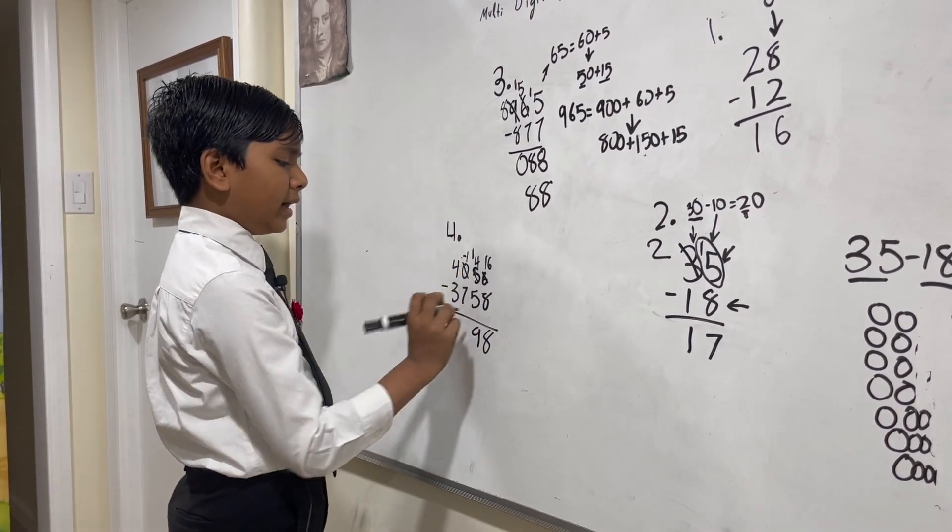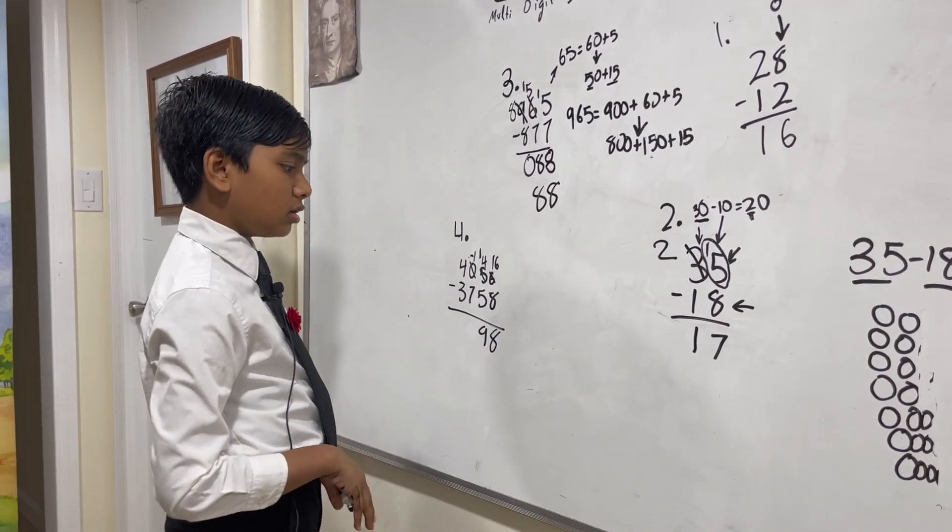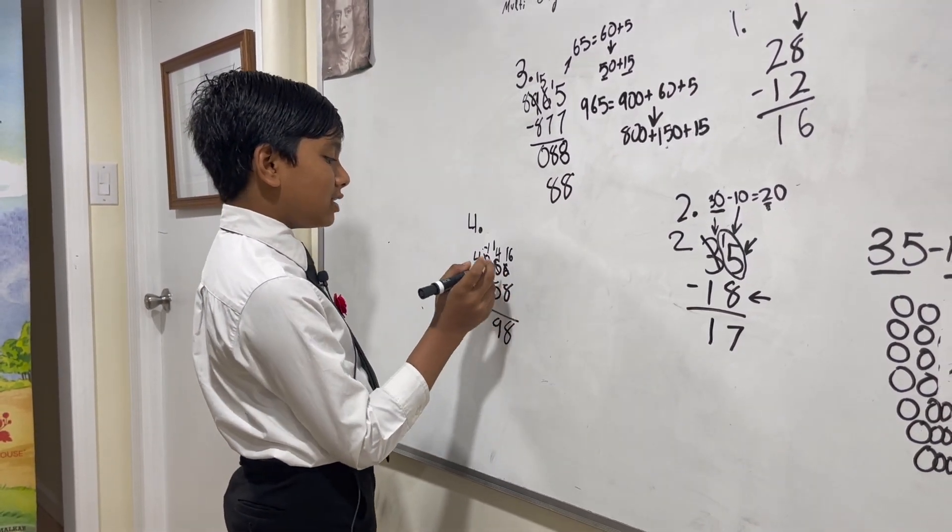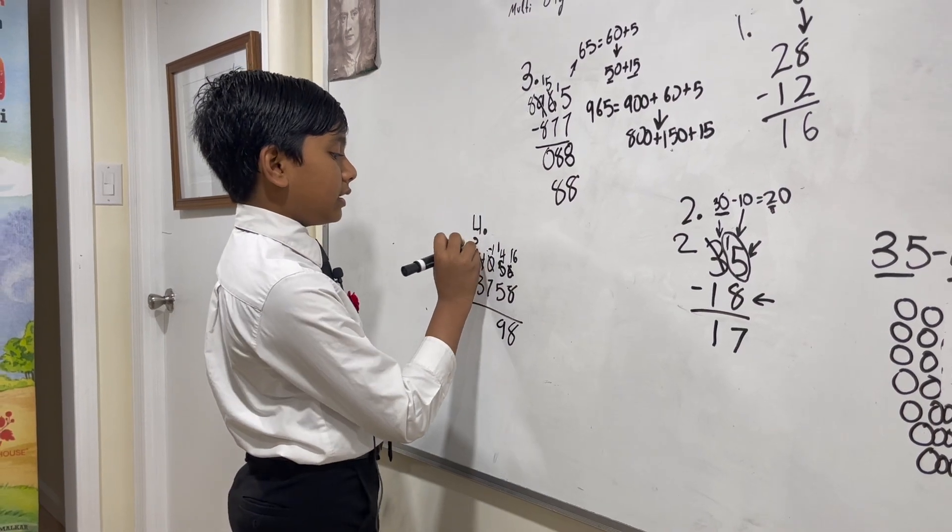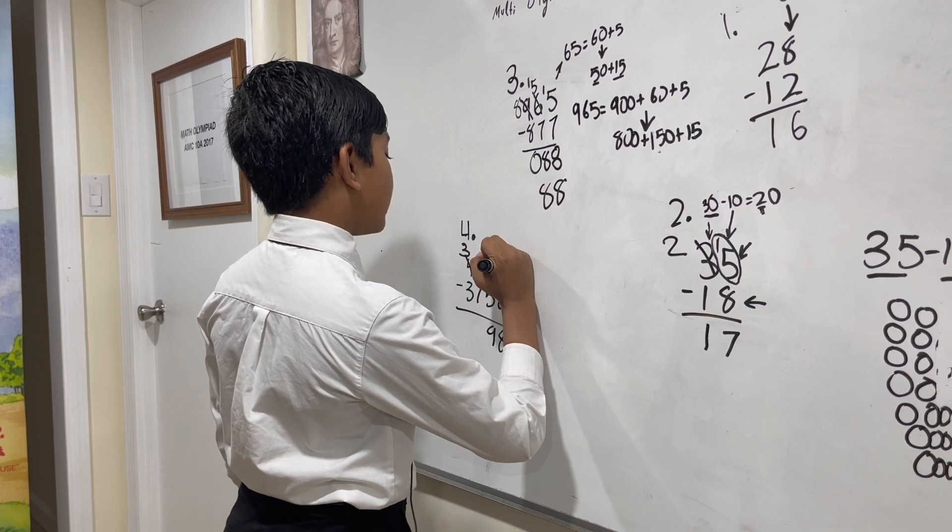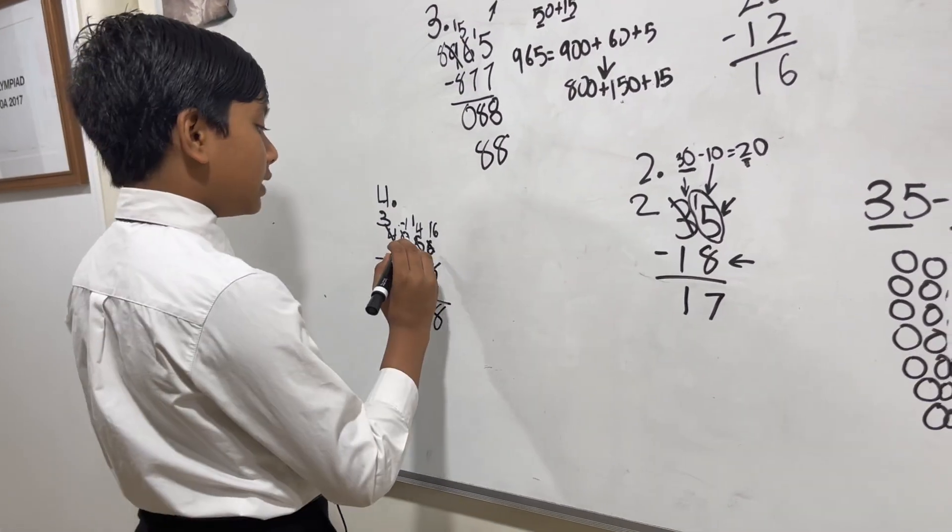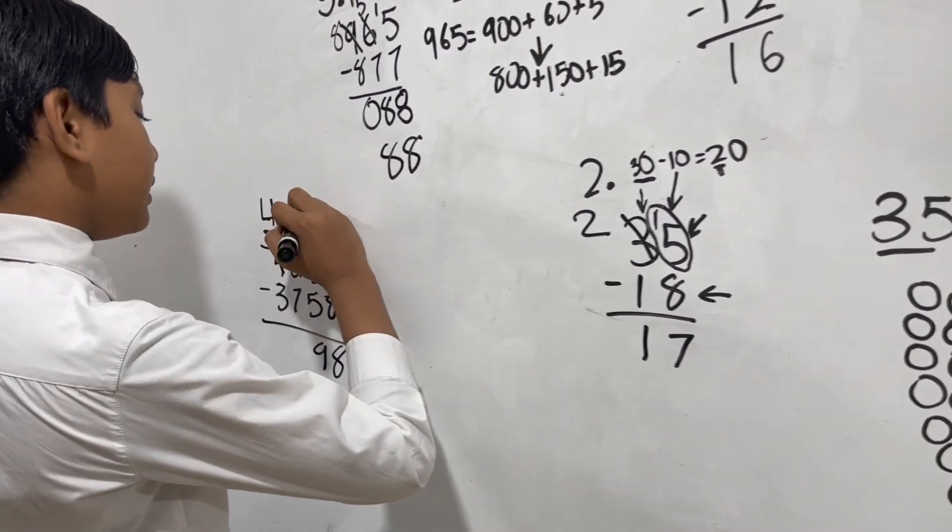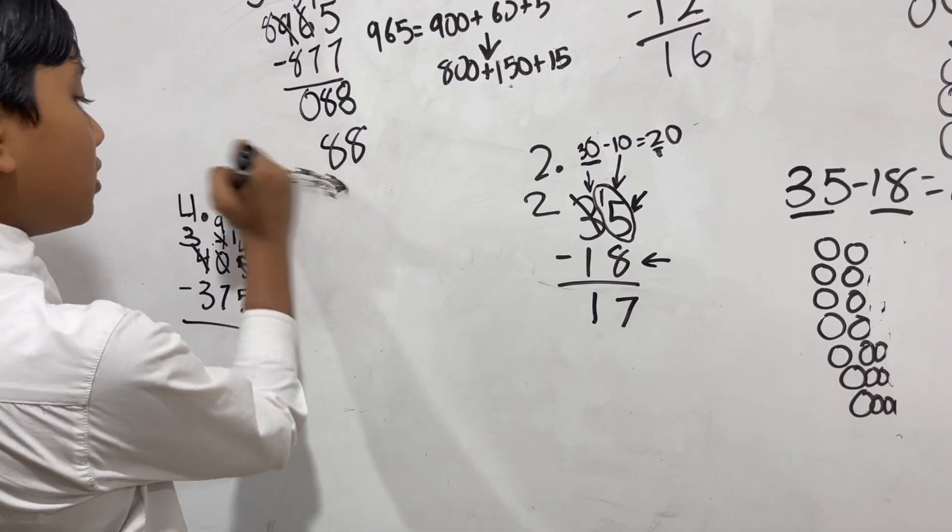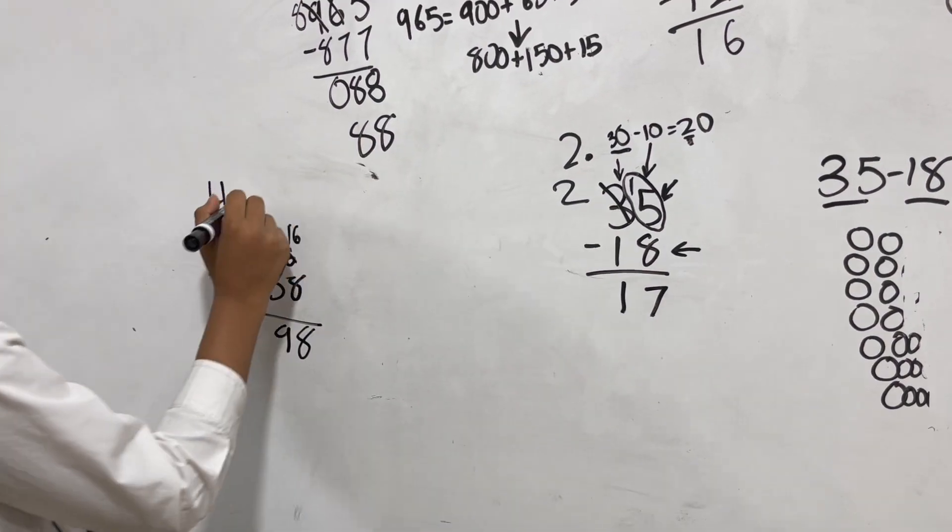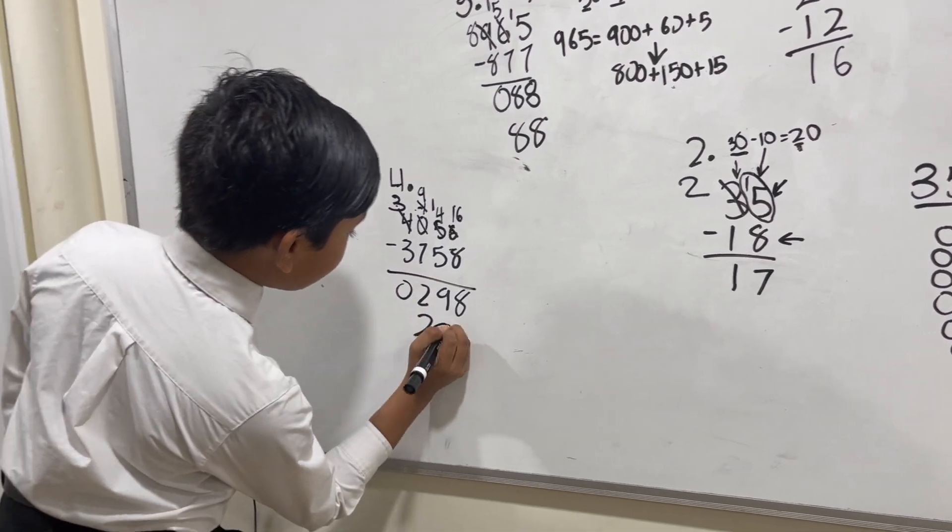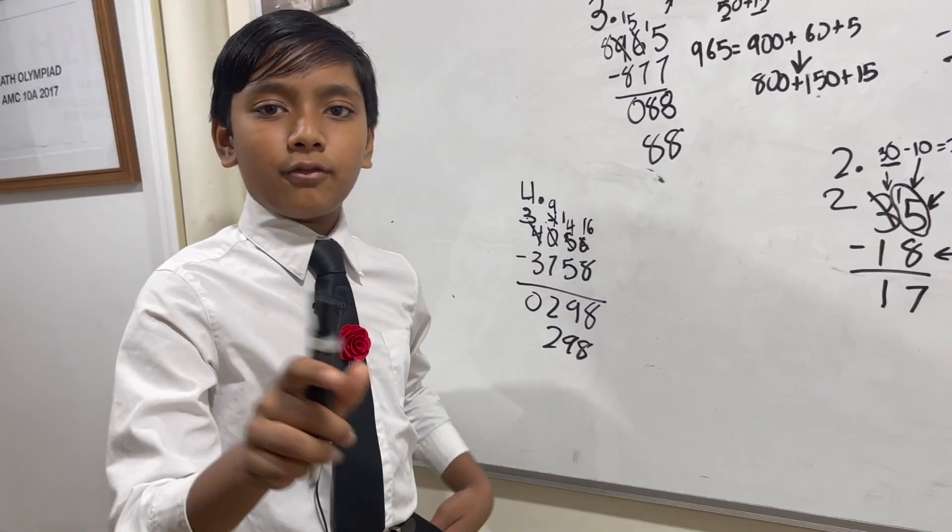Now we have negative 1 minus 7—that's not going to work. So instead we borrow from the 4,000, and this becomes 3,000. But this is negative 100. Negative 100 plus a thousand becomes positive 900. Think of it as adding negative 1 and 10. So this becomes 9. 9 minus 7 is 2, 3 minus 3 is 0: 2,098. That's it. Thank you everybody for watching.